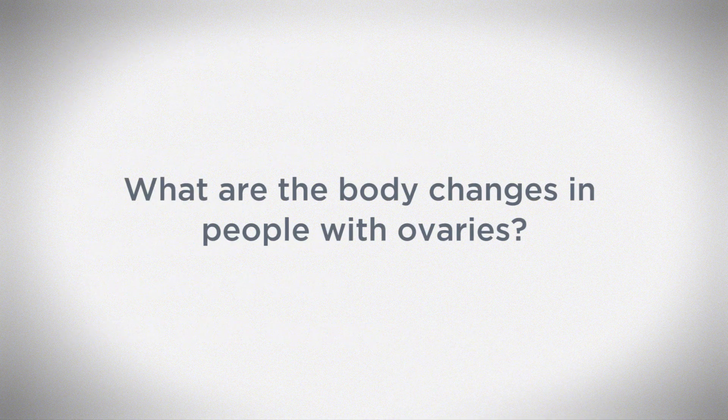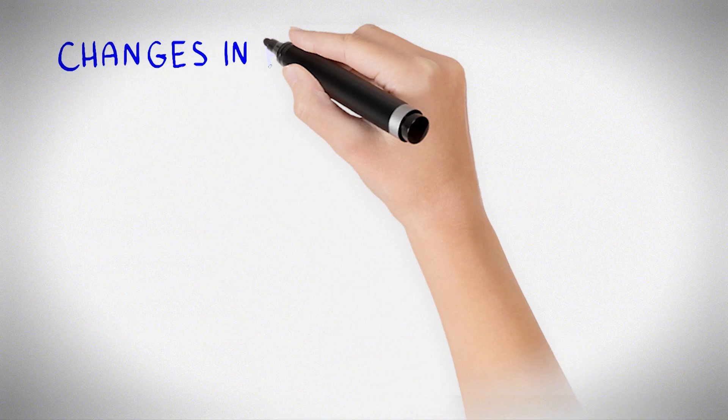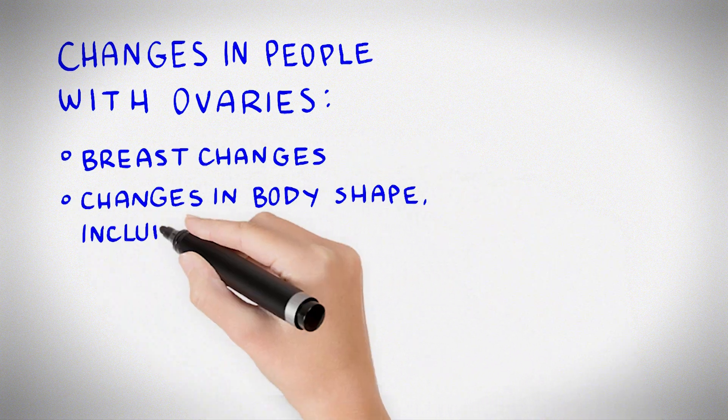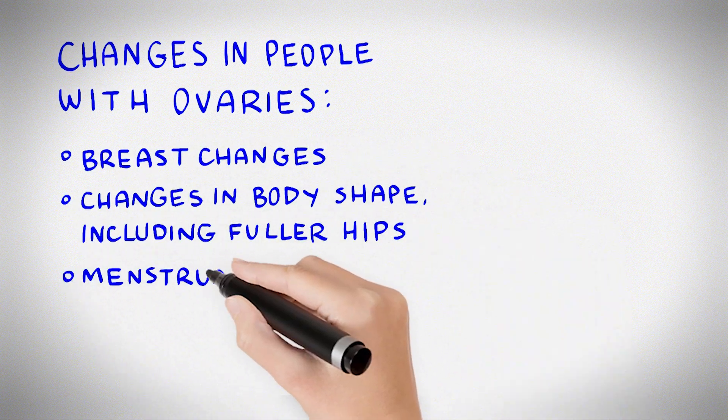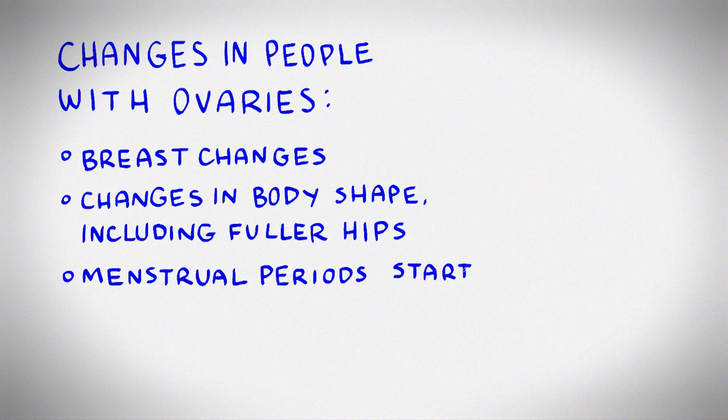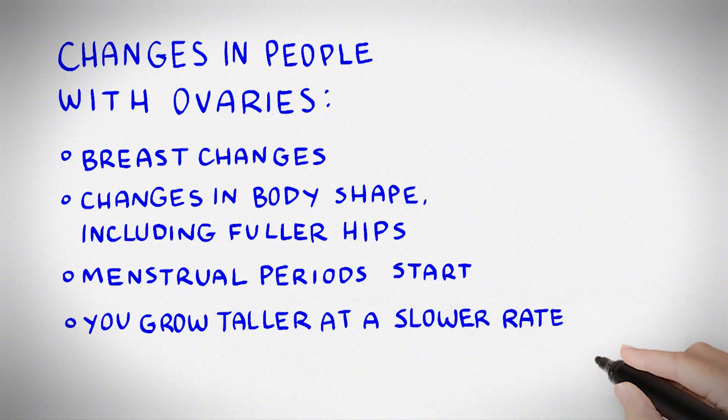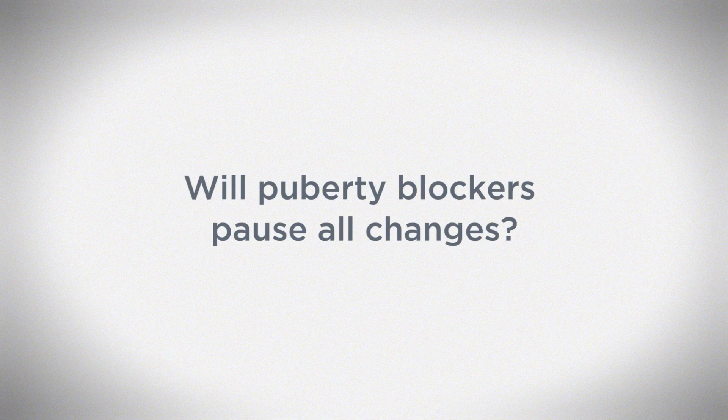What are the body changes in people with ovaries? Breast changes, changes in body shape including fuller hips, menstrual periods start usually more than two years after breast changes begin, and growing taller at a slower rate.